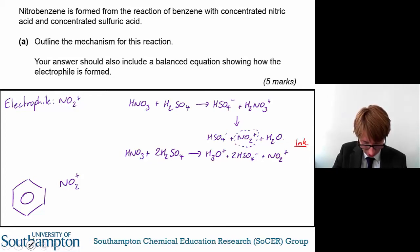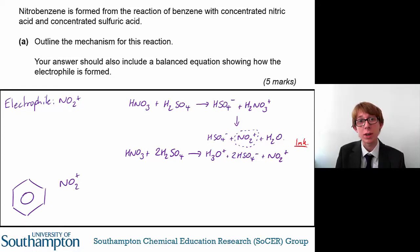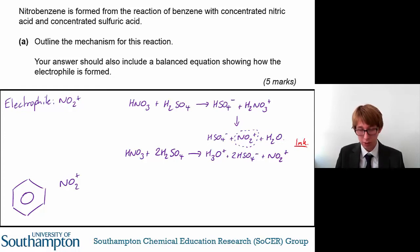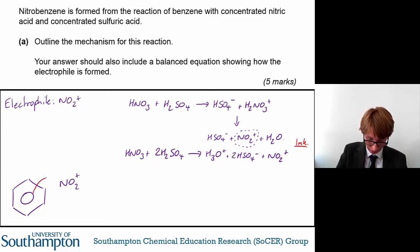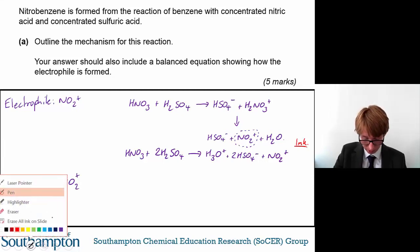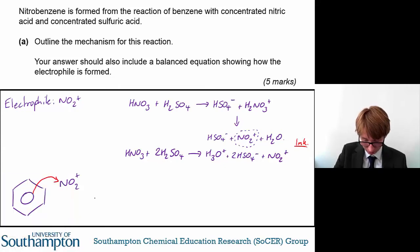The NO2+ is electron deficient and positively charged, and the benzene ring may be neutral, but it's got a region of high electron density in its delocalized ring. So the electrons in the delocalized ring — a pair of electrons here — will attack the nitro group, the NO2+ ion, and you'll form an intermediate.